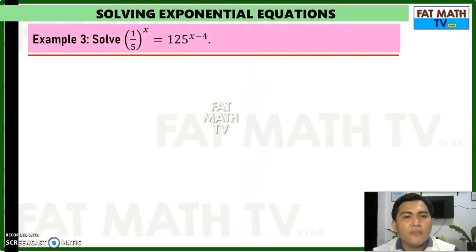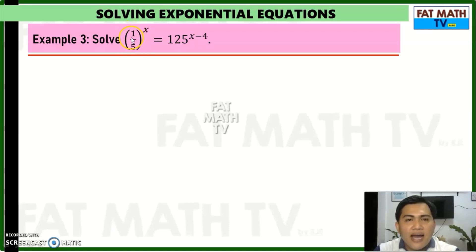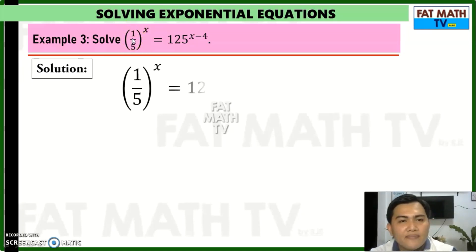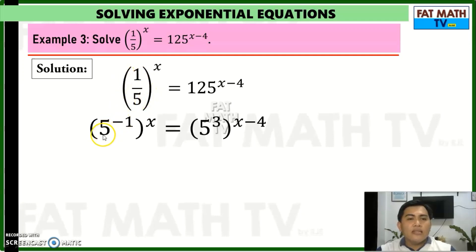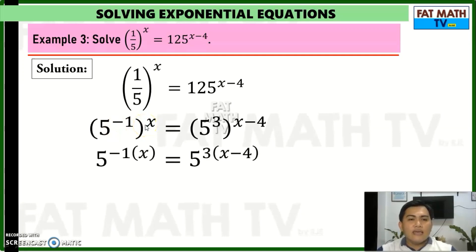Let's solve more problems. Solve (1/5) raised to x equals 125 raised to (x minus 4). We write them as powers of 5. One-fifth is actually 5 raised to negative 1 — if you move it to the numerator you change the sign of the exponent. So the left side is 5 raised to negative 1 raised to x, and 125 is 5 cubed raised to (x minus 4). Multiplying the exponents: negative 1 times x is negative x, so 5 raised to negative x on the left.